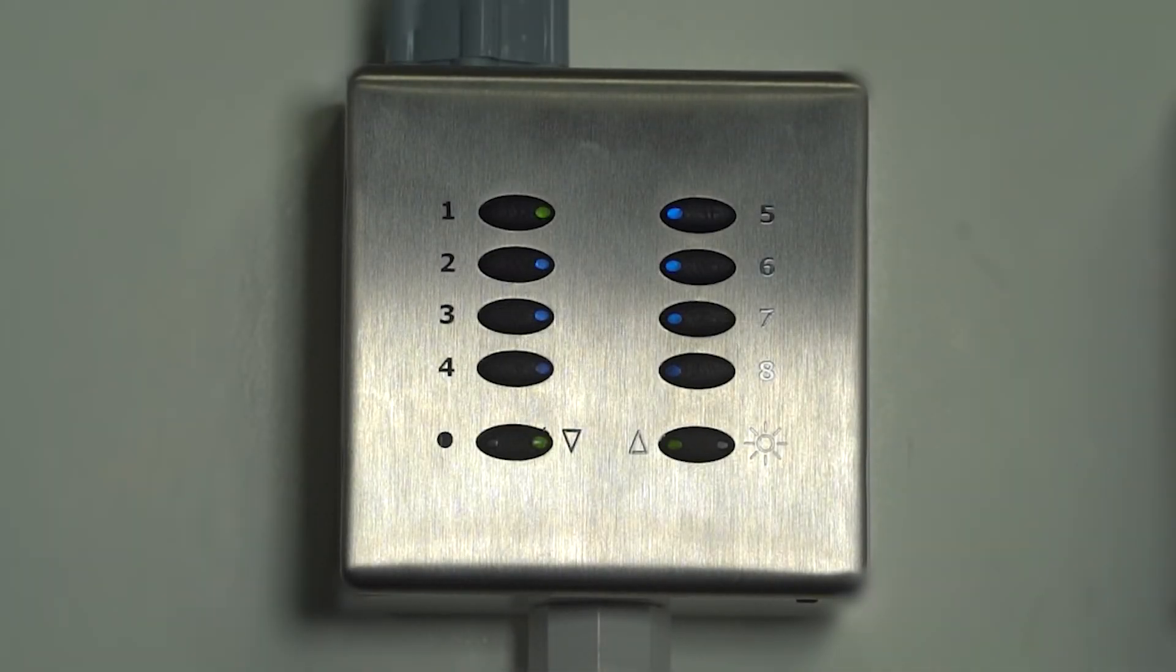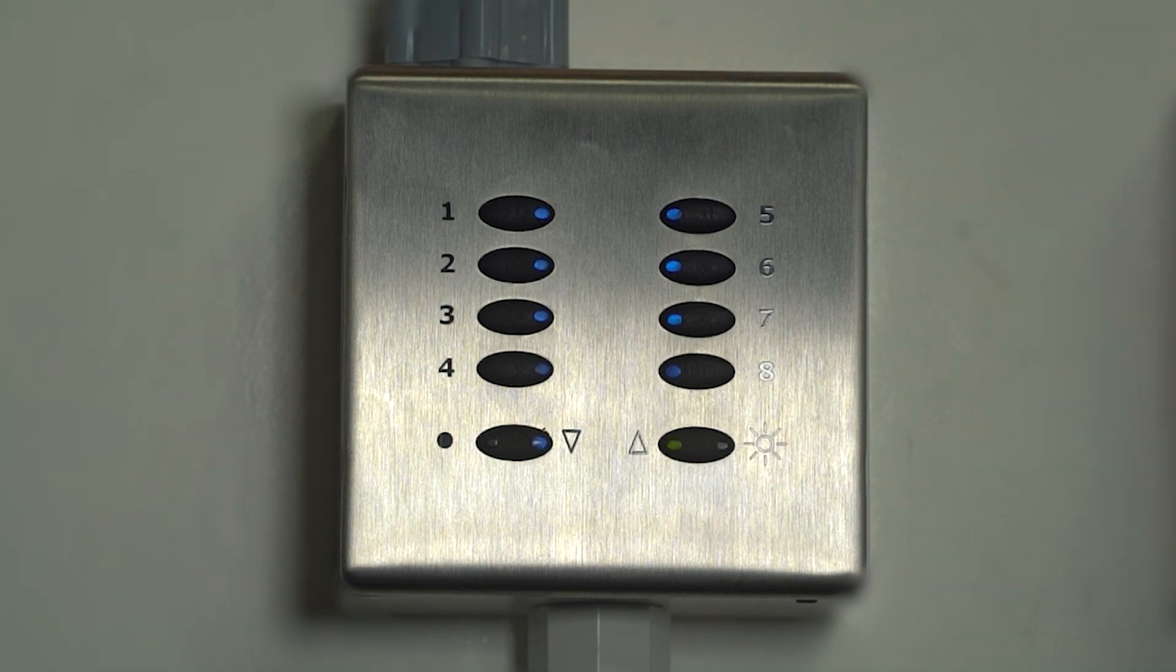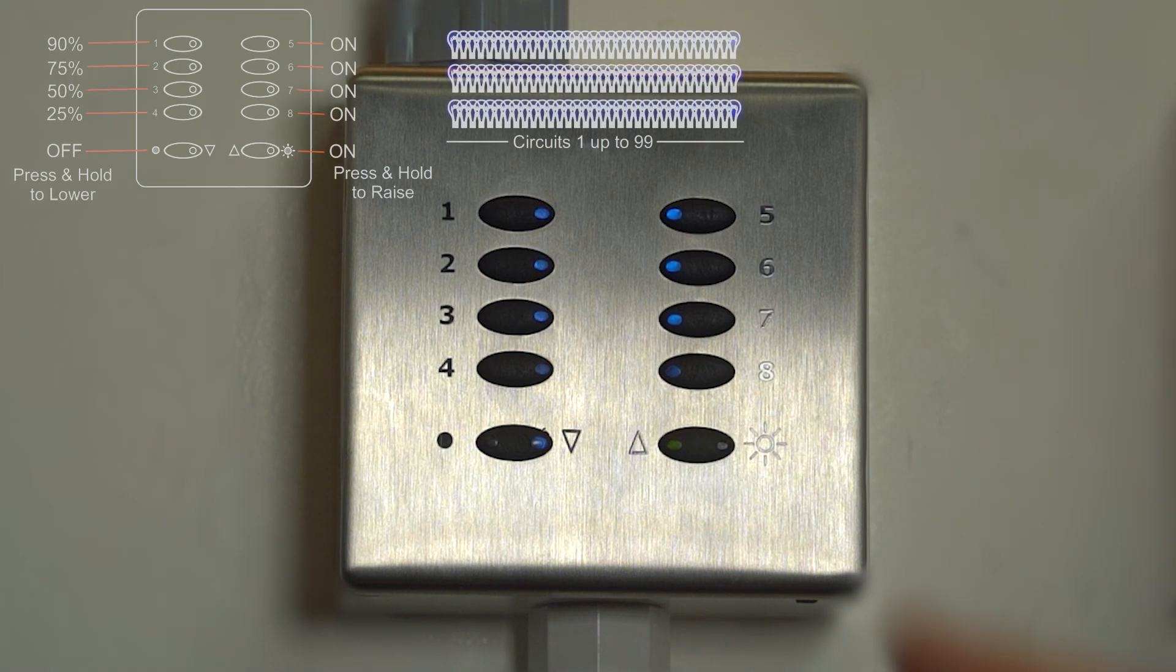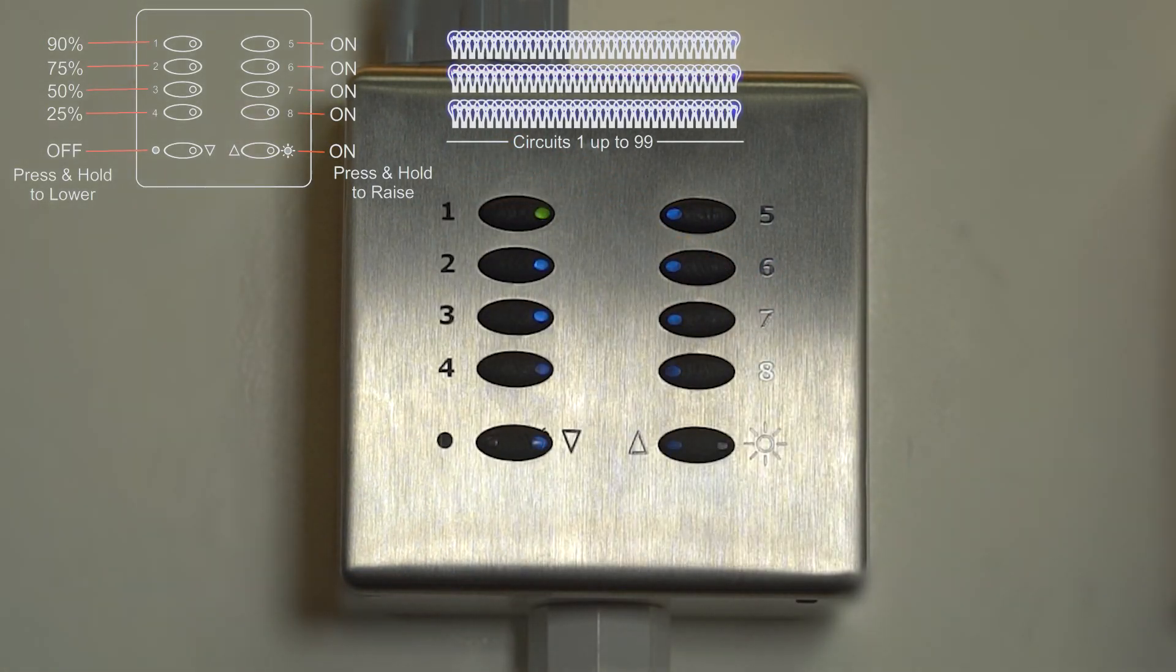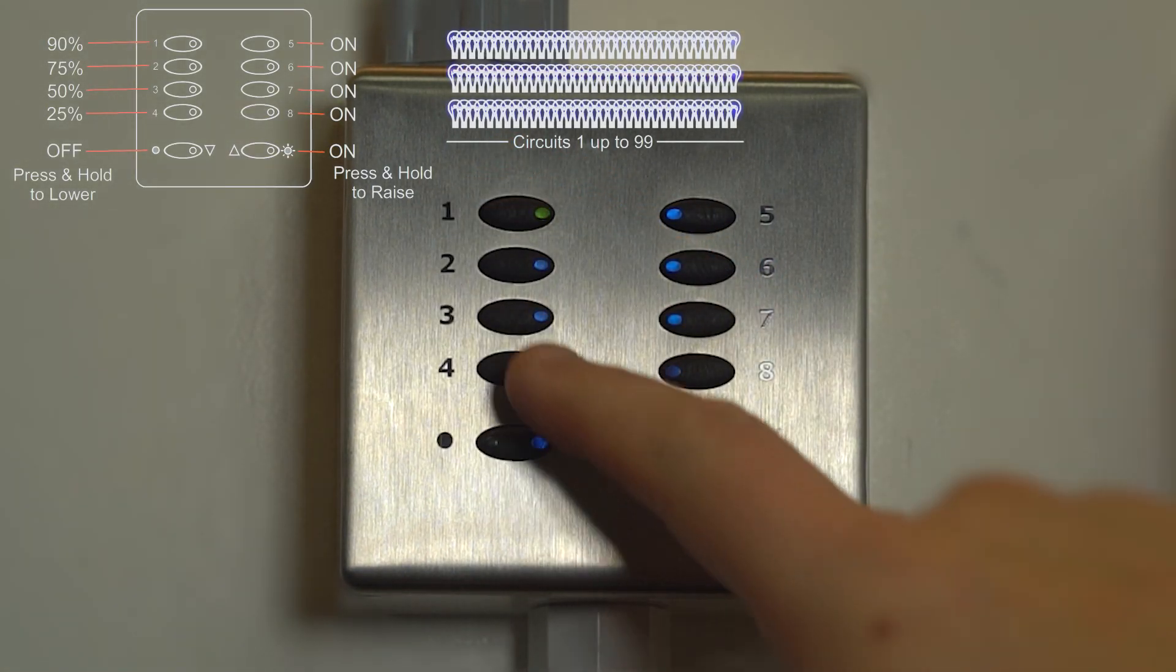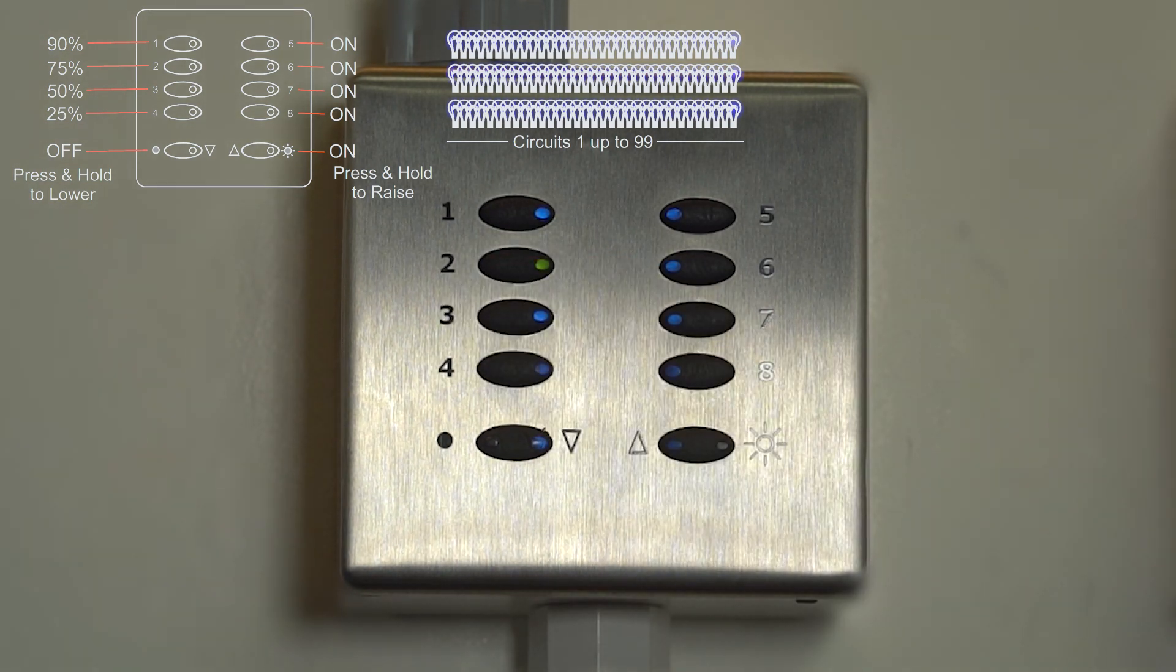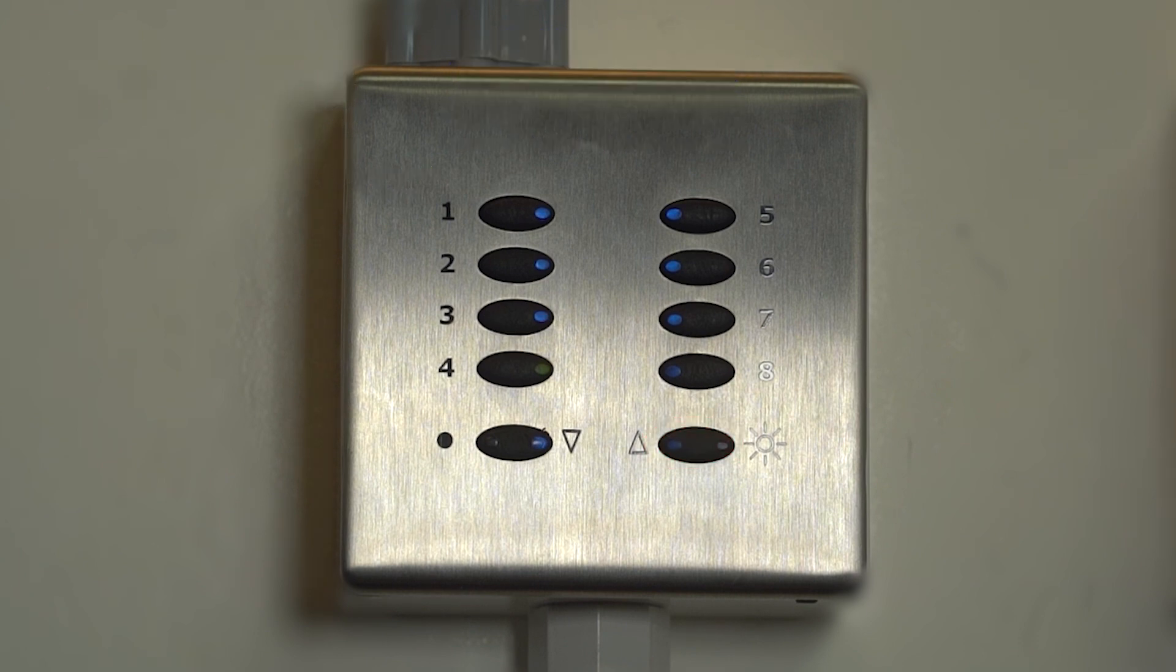Okay, first things first, we're going to cover default operation. Out of the box, the processor should be on 001, the plate will be controlling zone 1, and the default operation will be button 1 at 90%, button 2 at 75%, button 3 at 50%, button 4 at 25%, and there will be an all-off and an all-on at the bottom.